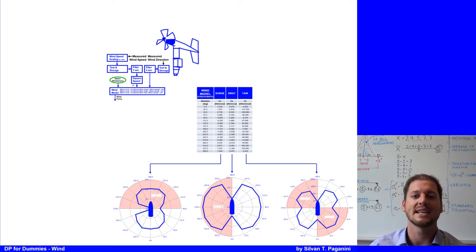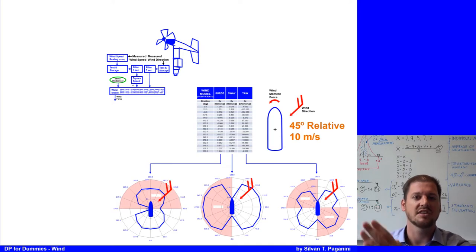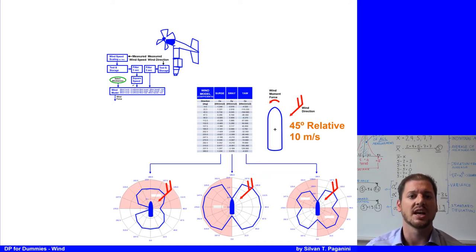Let's make an example. The wind is coming from the starboard bow, let's say 45 degrees relative, with 10 meters per second. If we compare it with the diagram, the coefficients make sense: in surge the vessel is pushed backwards, in sway the vessel is pushed to the port side, and also the heading is influenced.